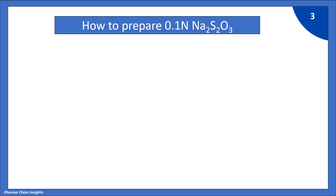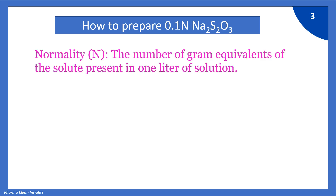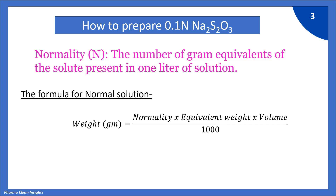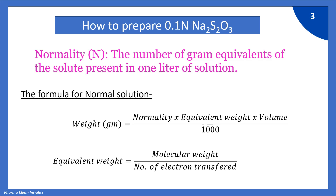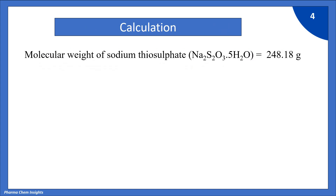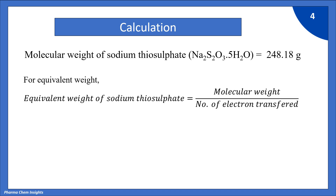Let us see how to prepare 0.1 normal sodium thiosulfate solution. Since we are preparing a normal solution, let us understand what normality is. Normality is the number of gram equivalent weights of the solute present in one litre of solution. The equivalent weight of sodium thiosulfate equals molecular weight divided by number of electrons transferred, which is 1, giving 248.18 divided by 1 = 248.18.